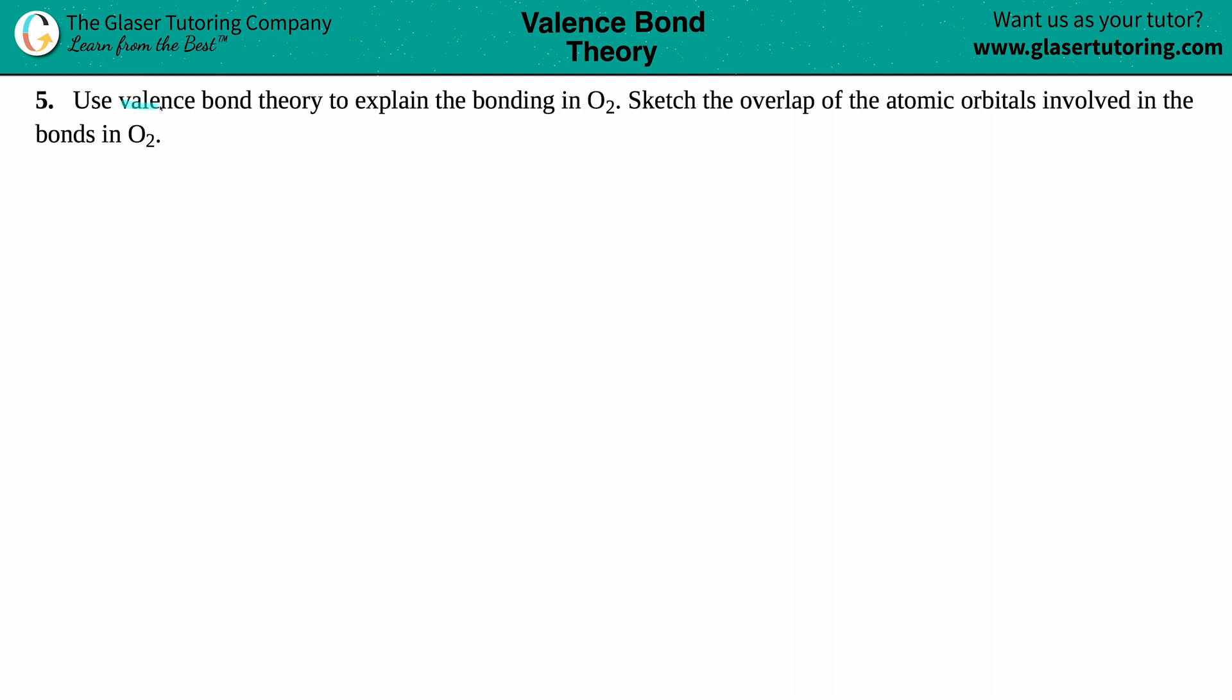Number five. Use valence bond theory to explain the bonding in O2. Sketch the overlap of the atomic orbitals involved in the bonds in O2.